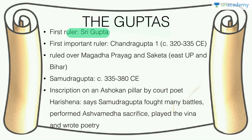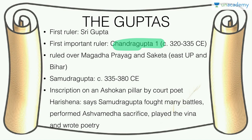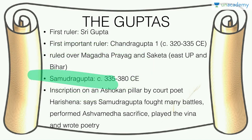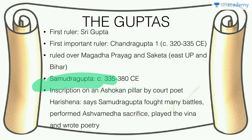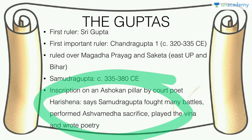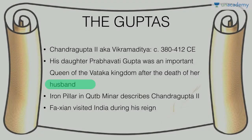The most important early Gupta ruler was Chandragupta I, who ruled from 320 to 335 CE — don't confuse him with Chandragupta Maurya who ruled around 321 BCE. Chandragupta I ruled over Magadha, Prayag, Saketa, and surrounding areas. His son Samudragupta ruled from 335 to 380 CE. We know a lot about him through an inscription on an Ashokan pillar by his court poet Harishena, who noted that Samudragupta fought many battles, performed the Ashvamedha sacrifice, and played the Veena — a well-rounded figure.